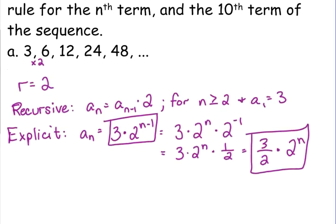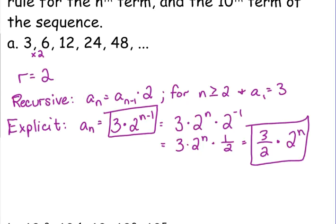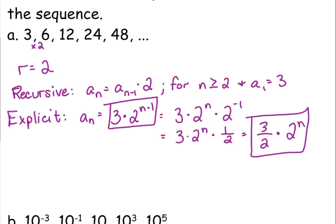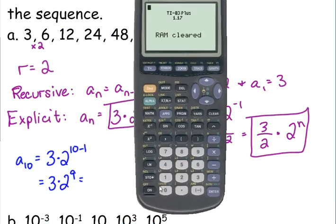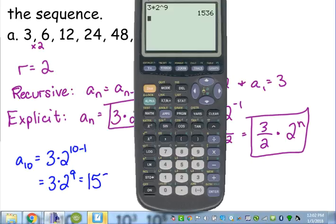Okay, the only thing that we need to do now is to find the 10th term. I'm going to use both of the explicit rules to show you that they give me the same answer. So if I'm finding A sub 10, if I plug it into the first one, 3 times 2 to the 10 minus 1, that equals 3 times 2 to the 9th, which is, I'm definitely going to use my calculator on that because I do not know what 2 to the 9th is off the top of my head.